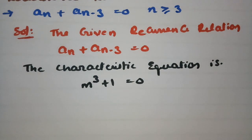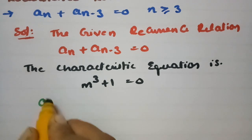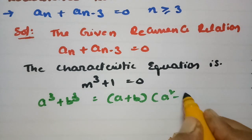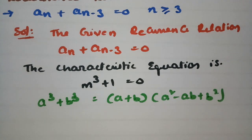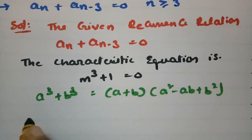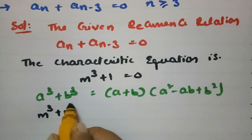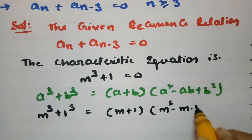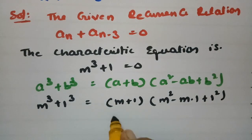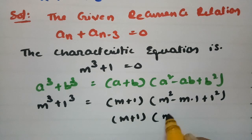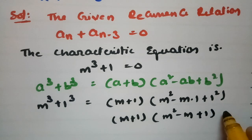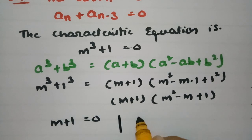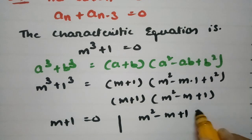Now we have to find the roots. We use the formula a³ + b³ = (a + b)(a² − ab + b²). Applying this, m³ + 1 can be written as (m + 1)(m² − m + 1) = 0. So the roots come from m + 1 = 0 and m² − m + 1 = 0.